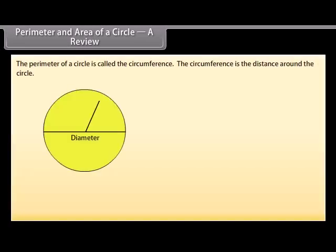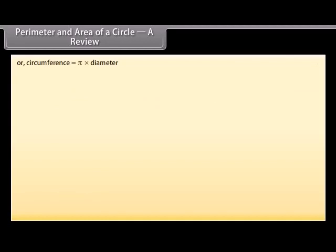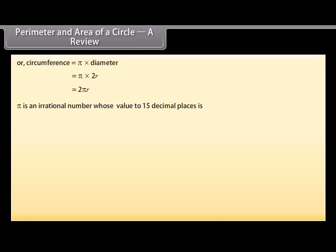The perimeter of a circle is called the circumference. The circumference is the distance around the circle. The ratio of circumference to its diameter is constant. This constant ratio is denoted by pi. Circumference equals pi times diameter, which equals pi times 2r, where r is the radius, so circumference equals 2πr. Pi is an irrational number whose value to 15 decimal places is 3.14159265358979.